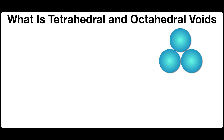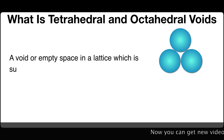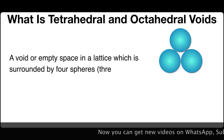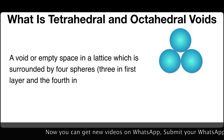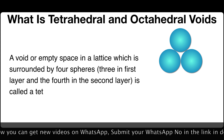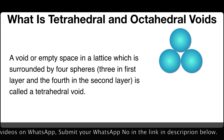What is tetrahedral and octahedral voids? A void or empty space in a lattice which is surrounded by four spheres — three in the first layer and the fourth in the second layer — is called the tetrahedral void.